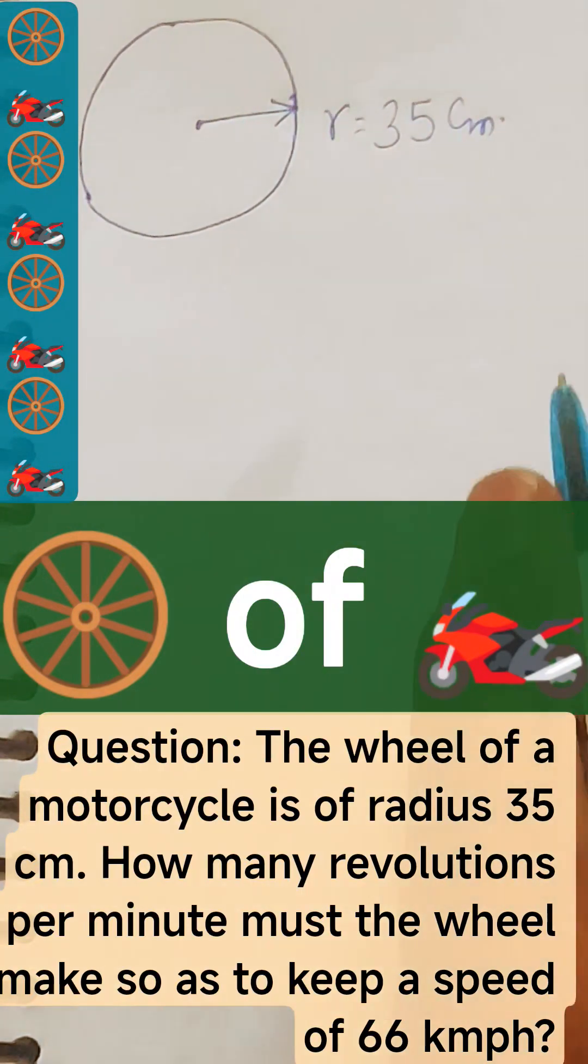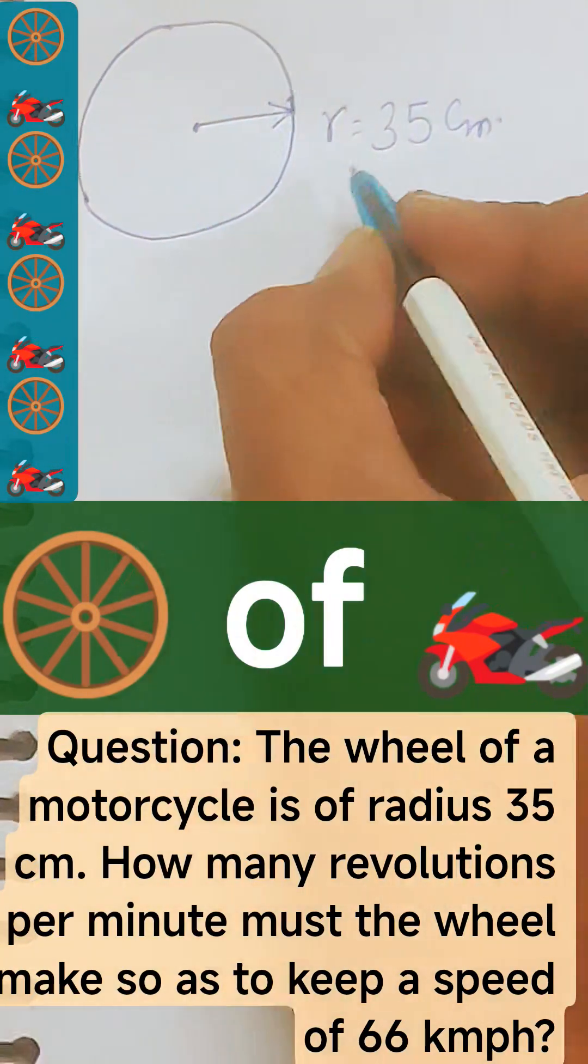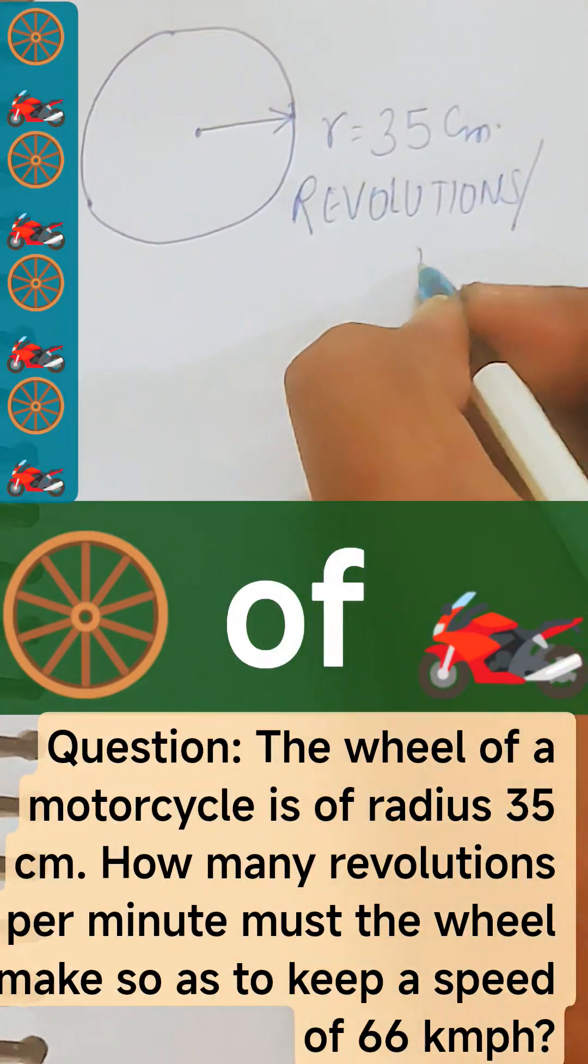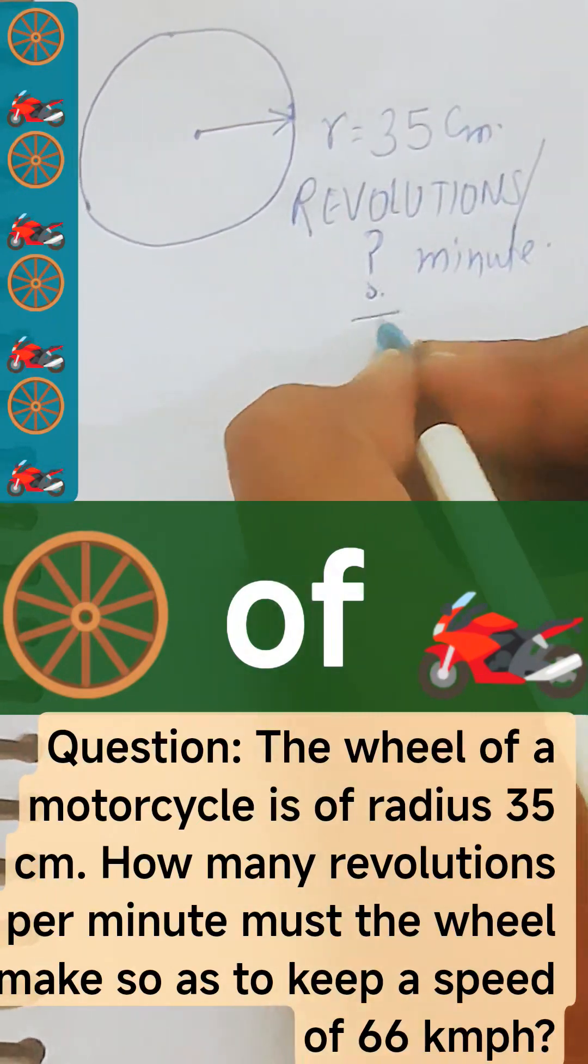Now how many revolutions per minute must the wheel make so as to keep a speed of 66 kilometer per hour? We need to find the revolutions per minute. This is the question to us.